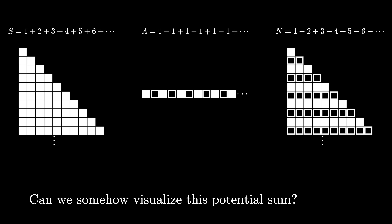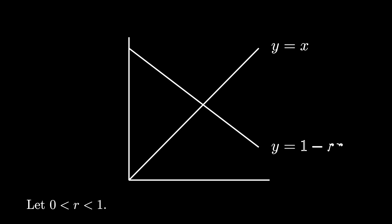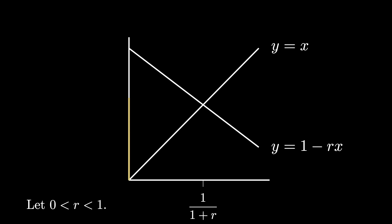Before we can use these structures, we first need to prove an auxiliary result about alternating geometric series. Start with a ratio r between 0 and 1, and consider the graphs of y equals x and y equals 1 minus rx. These are both lines, and they intersect at the point (1/(1+r), 1/(1+r)), so the x-coordinate of the intersection point is 1 over 1 plus r. The vertical distance from the origin to the line y equals 1 minus rx is 1, and then by plugging 1 into both functions, the vertical distance between them at x equals 1 is r.